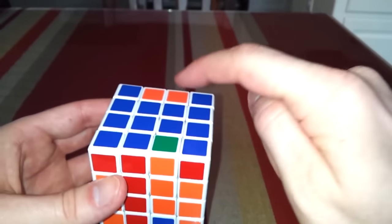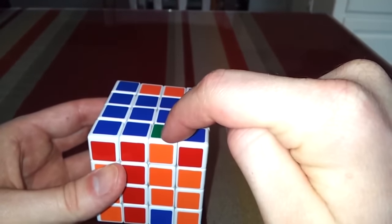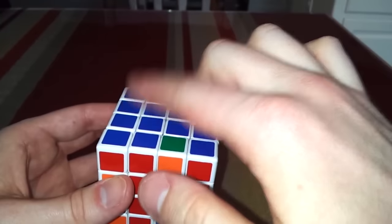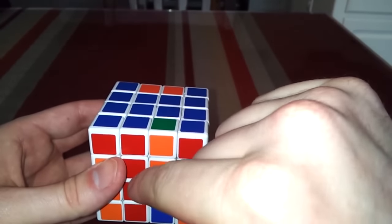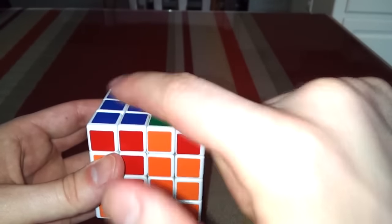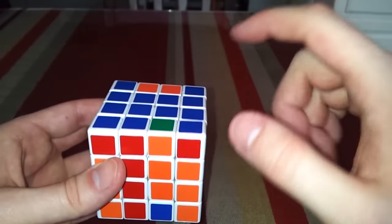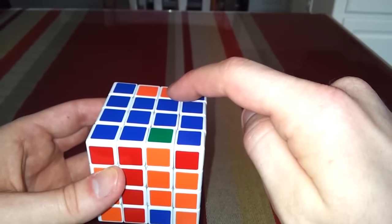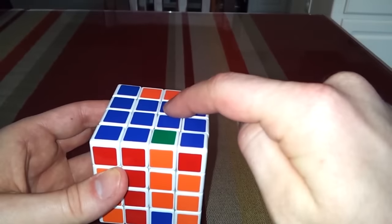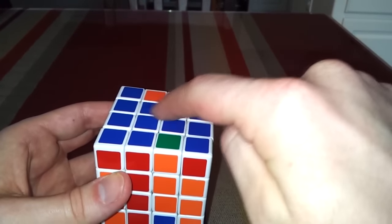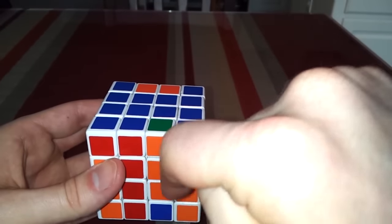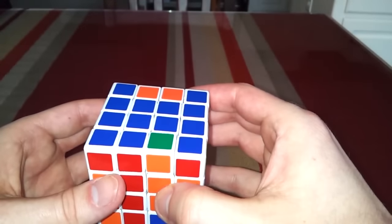So just to go over that real quick, it was down and then the top twice. Then it was down and then the front twice. And then it was up and then the front twice. So the pattern that helped me remember it was down and then a double move, down and then a double move, up and a double move. So that's the first section.